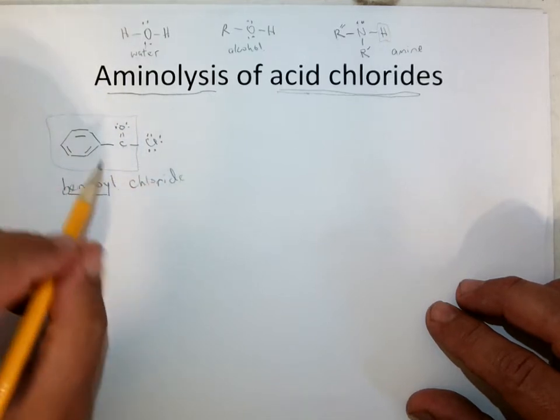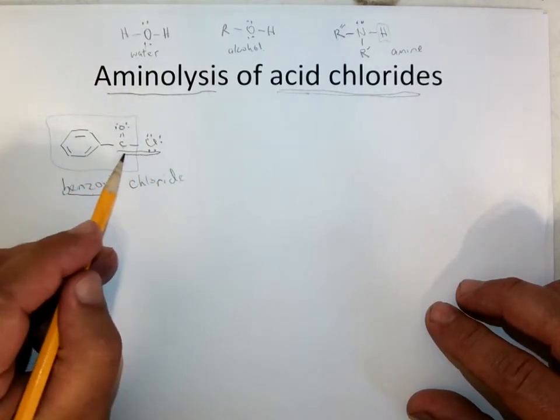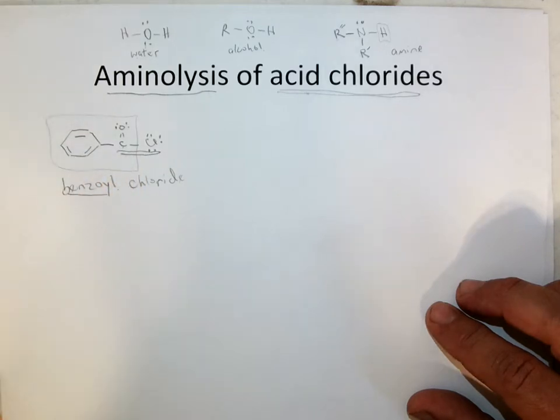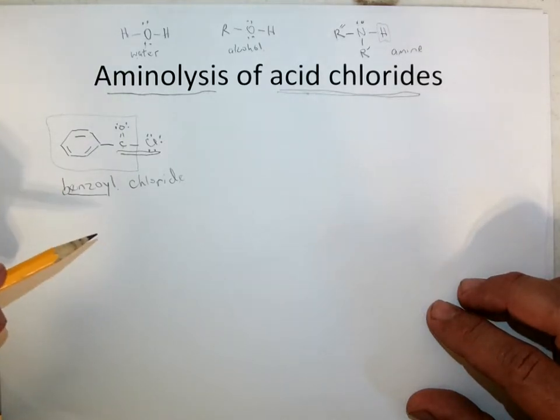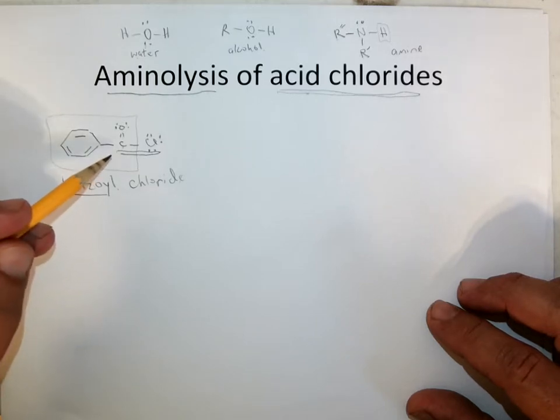And the reactive part is going to be the acid chloride part. The carbonyl attached to the chlorine, the phenyl is going to go along for the ride. So hopefully I'll copy it accurately in each step of the mechanism. But nothing reactive is going to happen to anything over here. All right, so here's our benzoyl chloride.